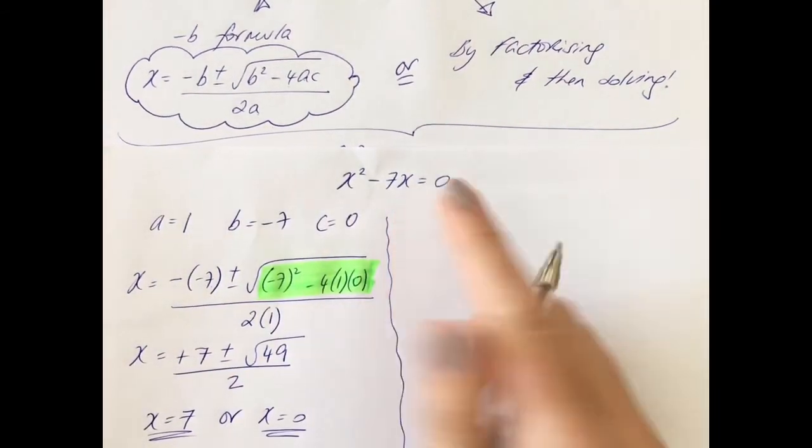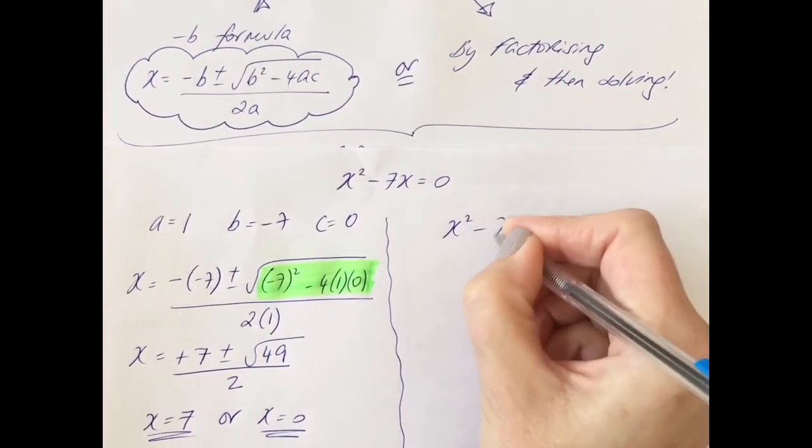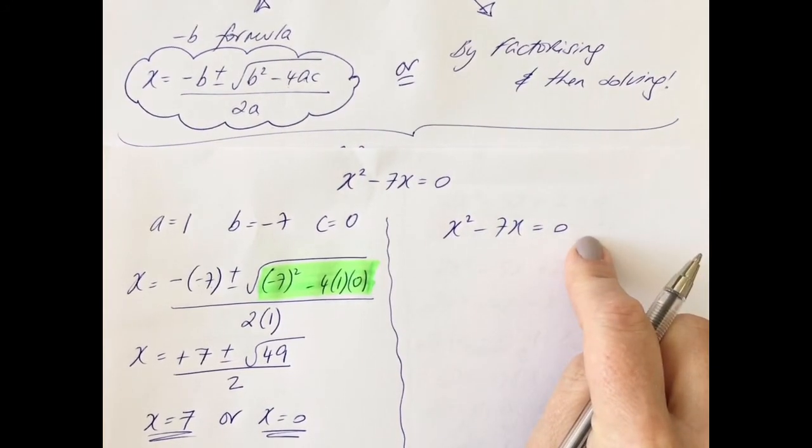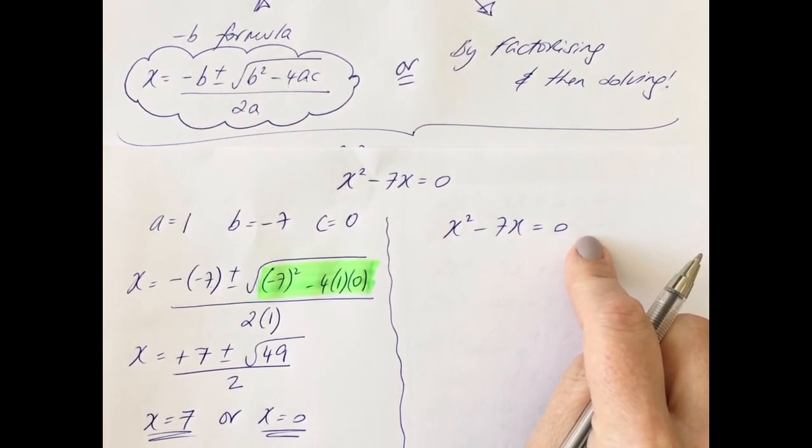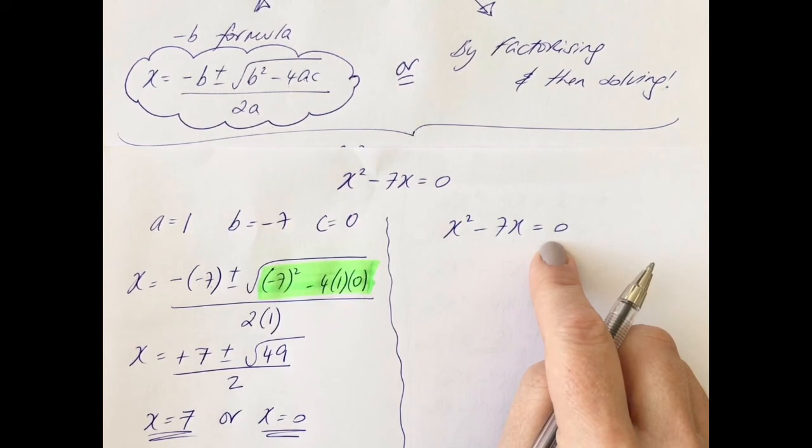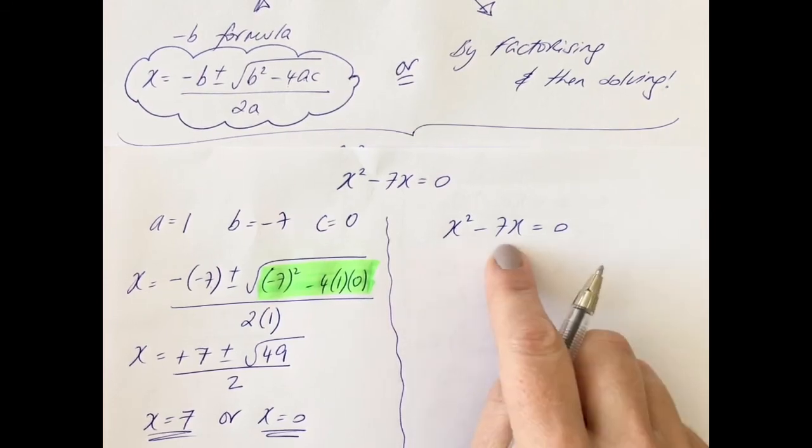So factorizing. We've already established it is not type 4 factorizing where you have a quadratic trinomial. So is it common terms, grouped common terms, or difference of two squares? And the answer is it is common terms.